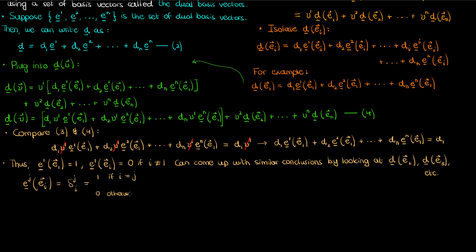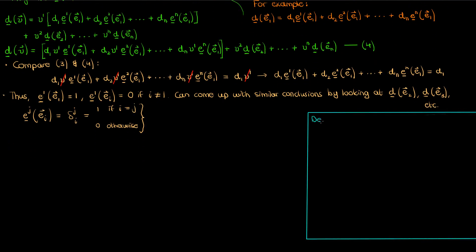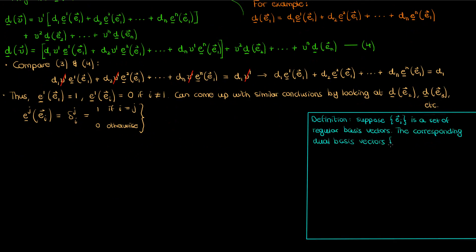So the Kronecker delta is 1 if i and j are equal, and 0 if i and j are different. This is one way to define the dual basis: the set of dual basis vectors e super j which, when applied to the corresponding regular basis vectors e sub i, result in the Kronecker delta. Each set of regular basis vectors has a corresponding set of dual basis vectors defined in this way.